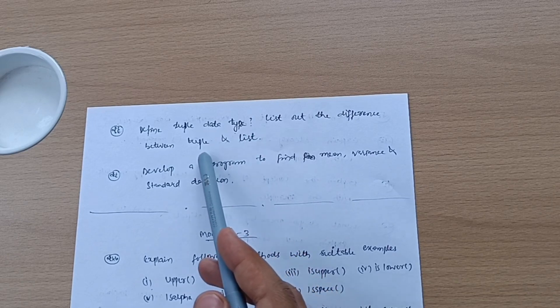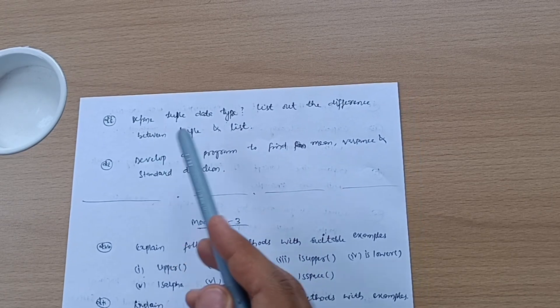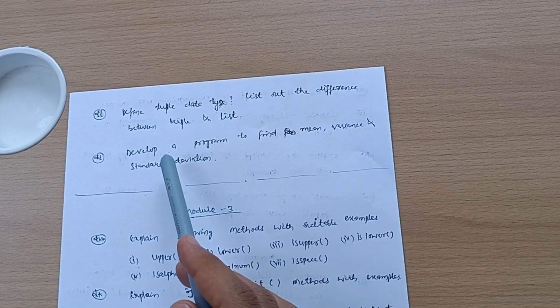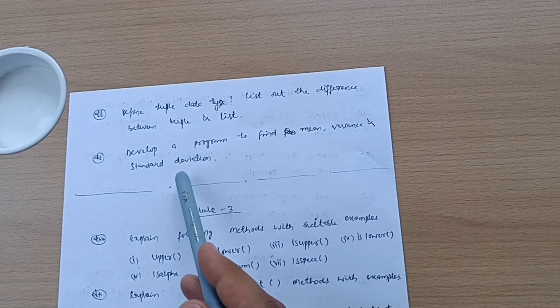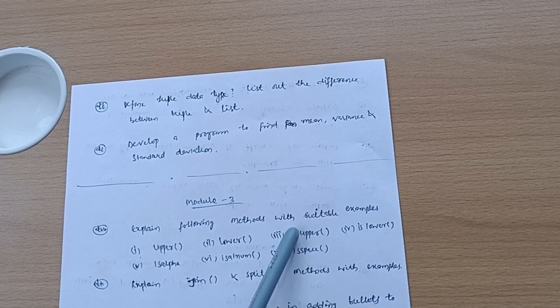Define tuple data type, list out the difference between tuple and list. Sometimes they may give you the difference between dictionary and list, so you should have some eye on that. Develop program to find mean, variance, and standard deviation. This is all about Module 2.